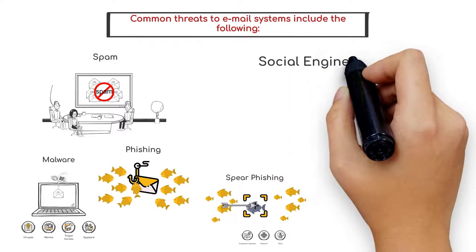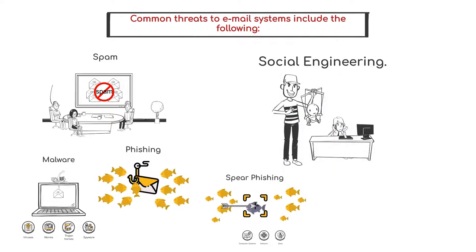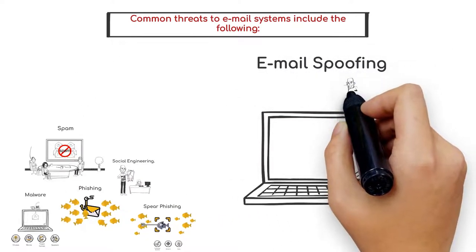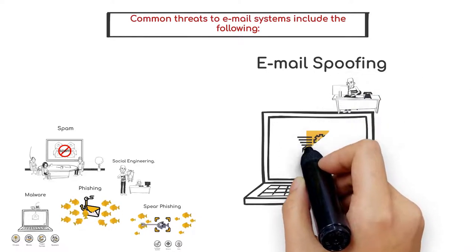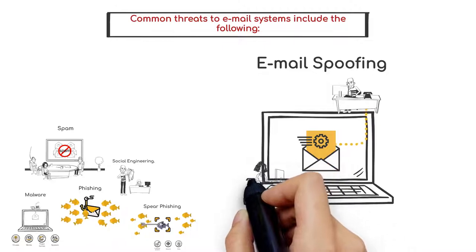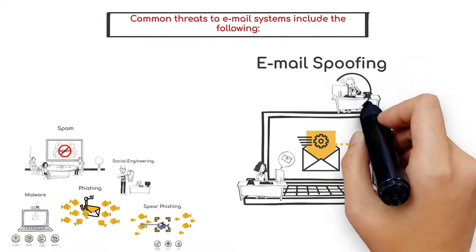Now, let's talk about social engineering. Rather than hack into a system, an attacker can use email to gather sensitive information from an organization's users or get users to perform actions that further an attack. A common social engineering attack is email spoofing, in which one person or program successfully masquerades as another by falsifying the information.